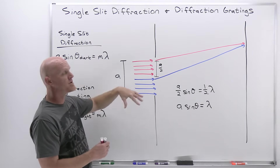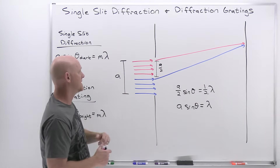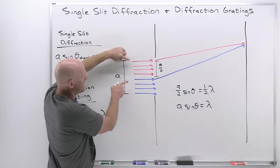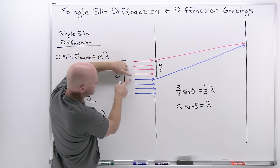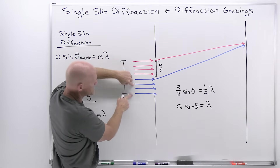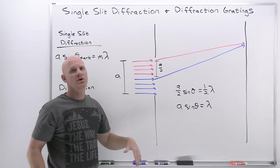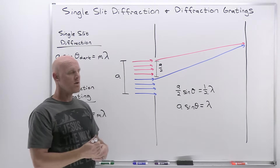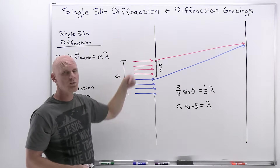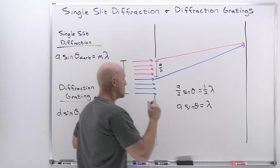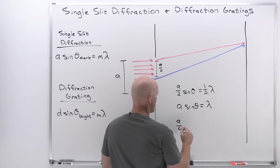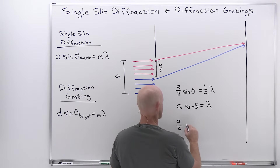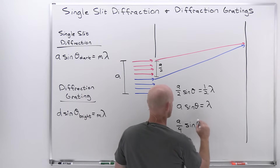If we split this up into four regions, instead of going halfway down we just go a fourth of the way down. We pair those two up, and those two, and so on. Now instead of having a distance between paired light rays of A over 2, we'd have a distance of A over 4. So the path length difference would be A over 4 times sine theta.